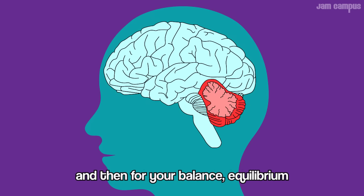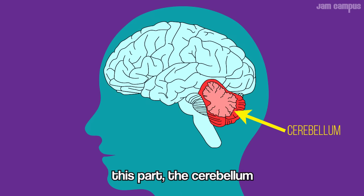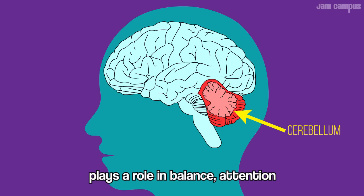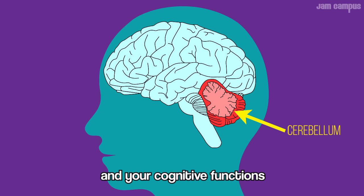For balance and equilibrium, there's the cerebellum. It handles visceral balance, attention, control of motor movements, and cognitive functions like language and attention.